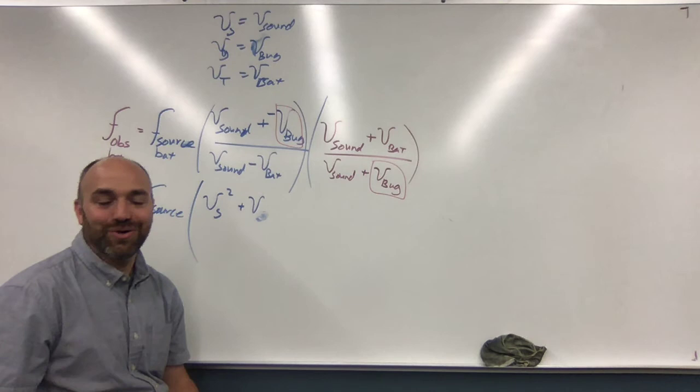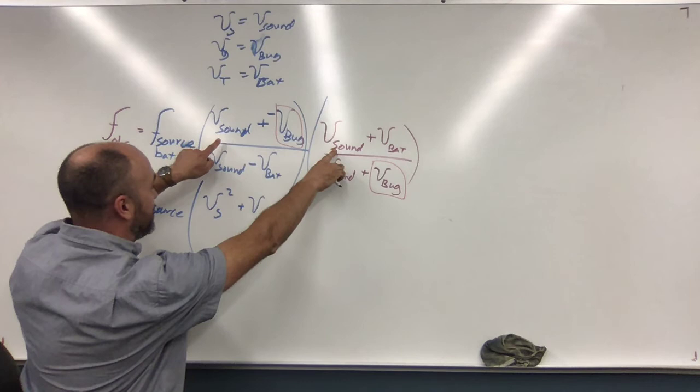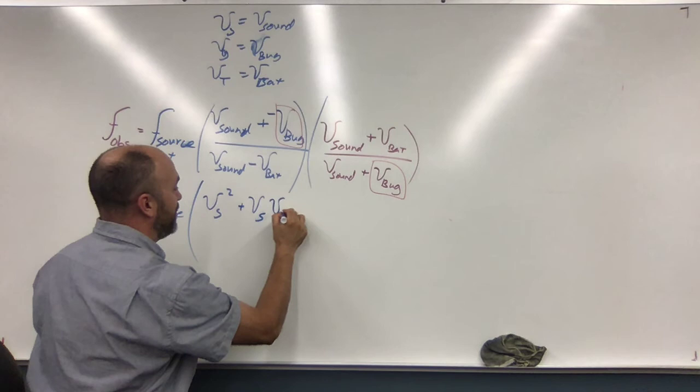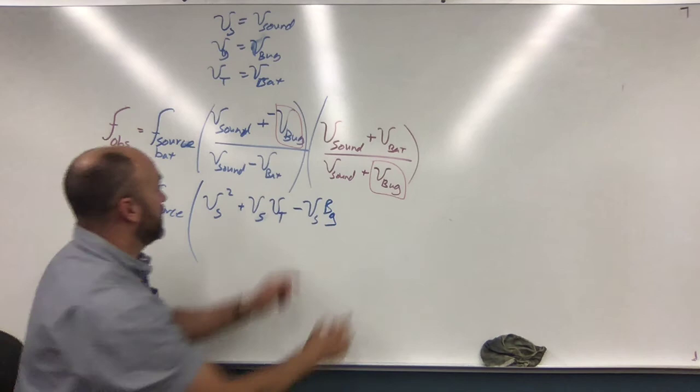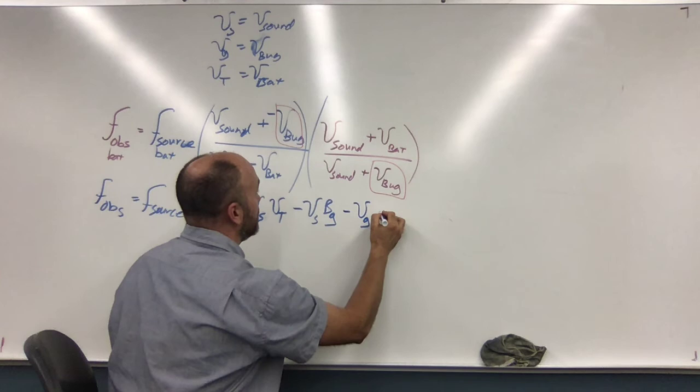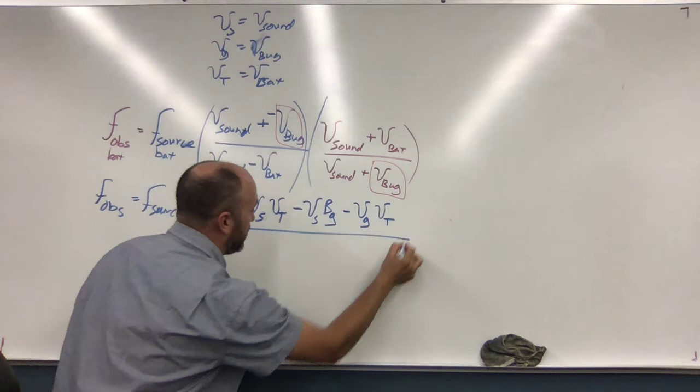And now we're gonna have minus Vs times V bug. And then we're gonna have this last piece here, minus V bug times V bat. Divided by—downstairs we're gonna have Vs squared again, and now we're gonna have plus Vs Vg, and here we're gonna have minus Vs V bat.